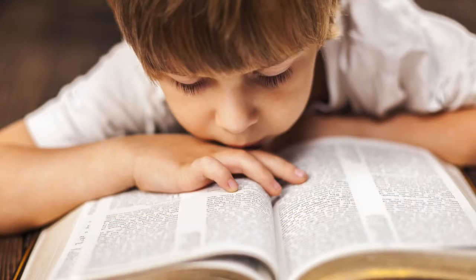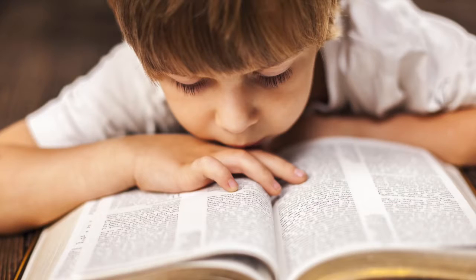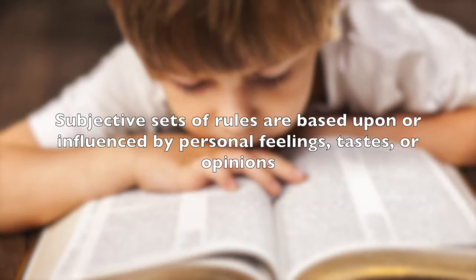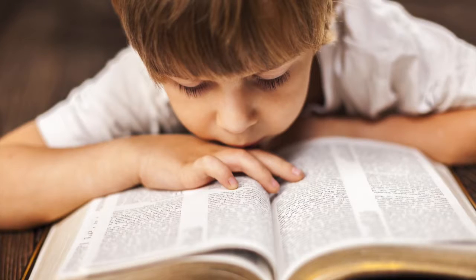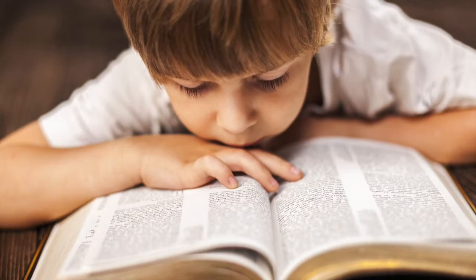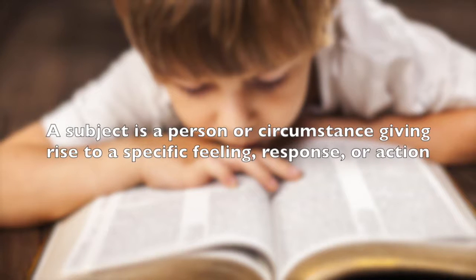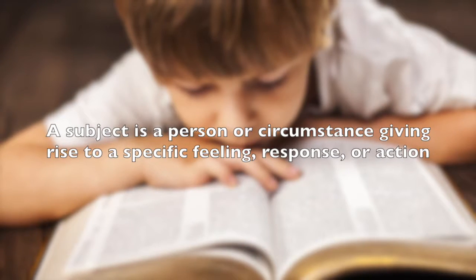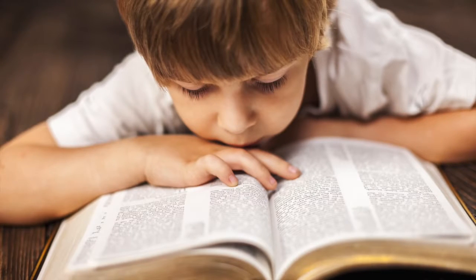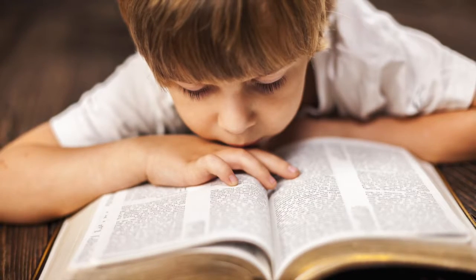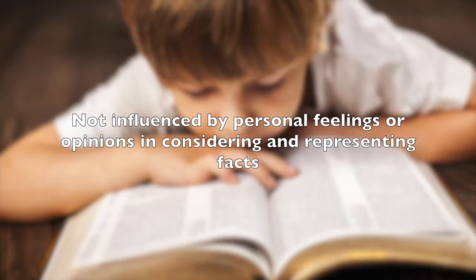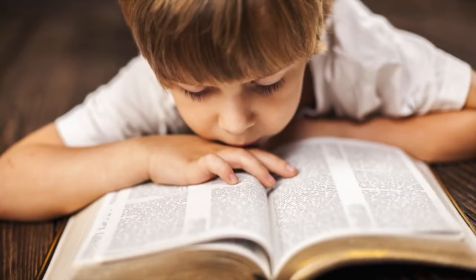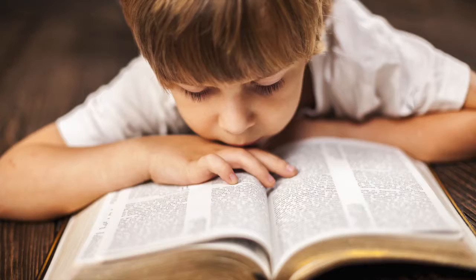Reasoning can be contrasted with cognitive processes governed by a subjective set of rules. Subjective sets of rules are based upon or influenced by personal feelings, tastes, or opinions, and are dependent upon the specific experience of the subject. Objectivity, by contrast, means not influenced by personal feelings or opinions in considering and representing facts, and not dependent upon the specific subject for existence or actuality.